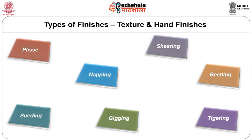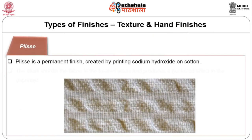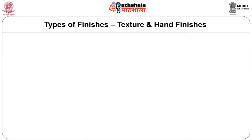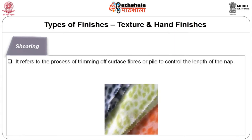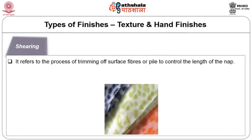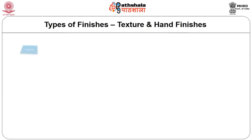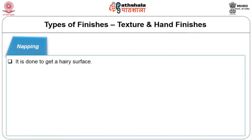Plissé is a permanent finish created by printing sodium hydroxide on cotton; the alkali shrinks the fabric in treated areas and produces a puckered effect in the unprinted area. Shearing refers to trimming off surface fibers or pile to control the length of the nap, creating a smooth fabric with uniform surface. This is done by a machine similar to a lawn mower.